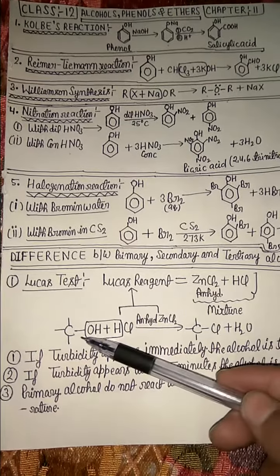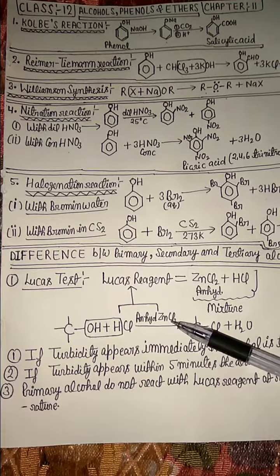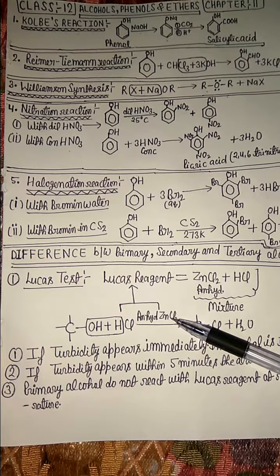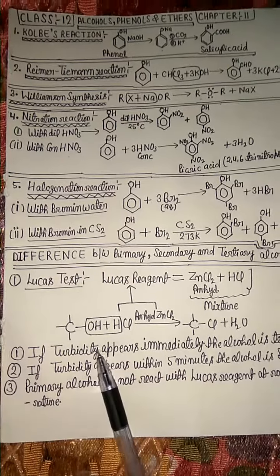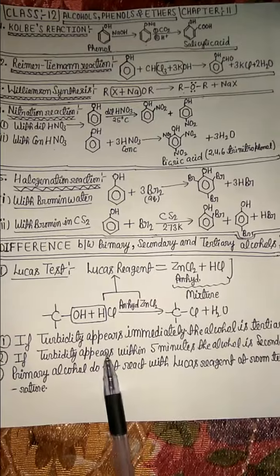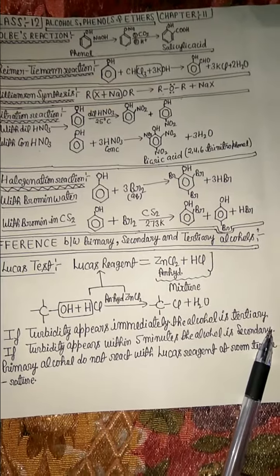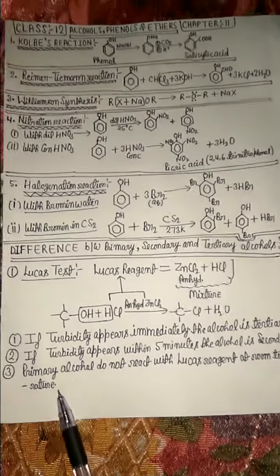Primary alcohol reacts with Hydrochloric Acid and Anhydrous Zinc Chloride to form Alkyl Chloride and Water. If turbidity appears immediately, the alcohol is Tertiary. If turbidity appears within 5 minutes, the alcohol is Secondary. Primary Alcohol does not react with Lucas Reagent at room temperature.